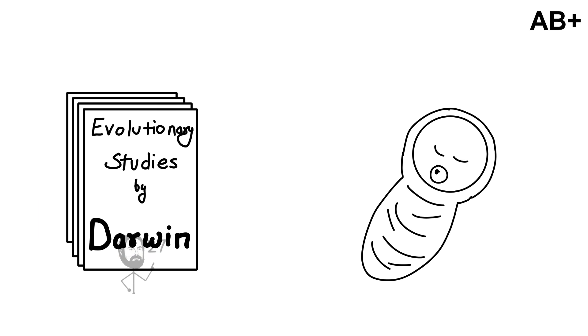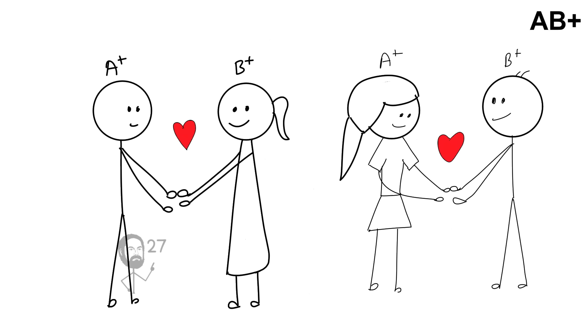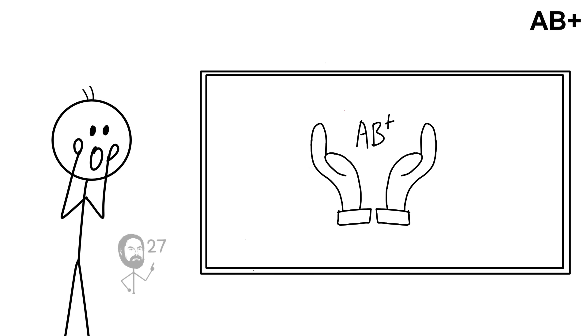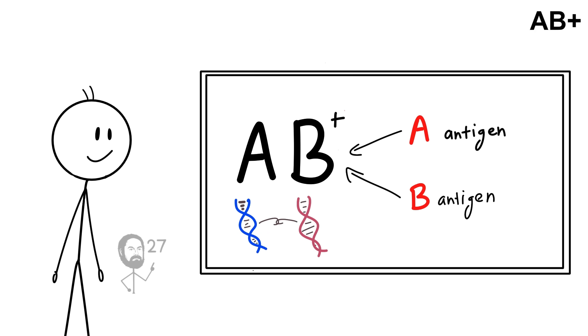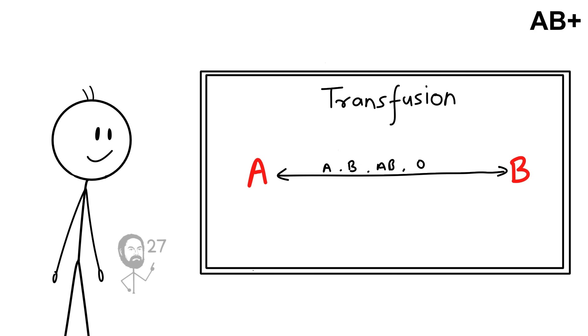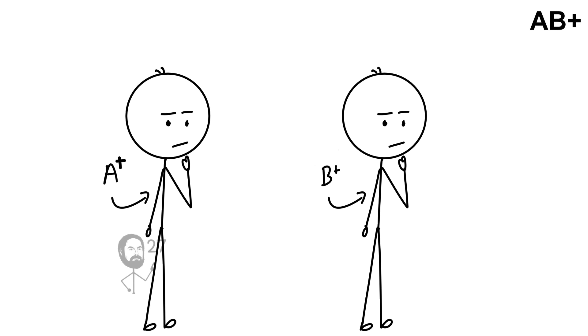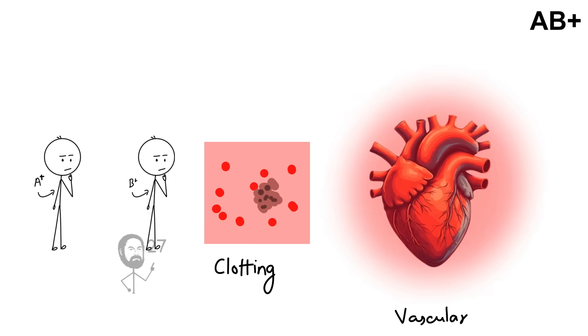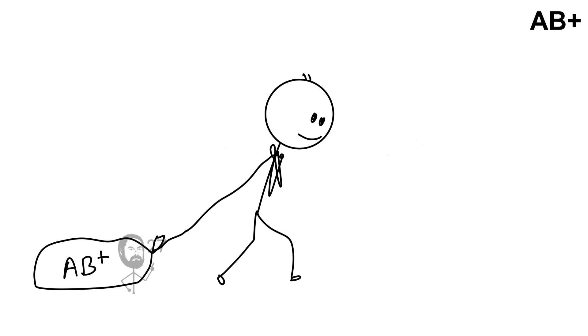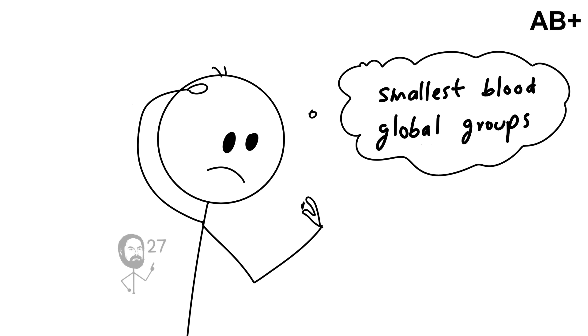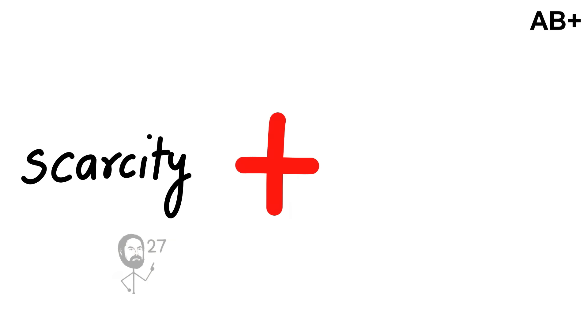Evolutionary studies suggest that AB is the youngest blood type, emerging only a few thousand years ago through the mixing of A and B populations. Its rarity makes it valuable to researchers studying genetic diversity, since it represents a blending of two distinct antigen systems into one. The same antigens that provide broad transfusion compatibility, however, are linked with trade-offs. Type AB individuals show higher susceptibility to certain clotting and vascular conditions compared to O-types. Still, carrying AB-positive means belonging to one of the smallest global blood groups while possessing the widest transfusion safety net, an unusual evolutionary combination of scarcity and advantage.